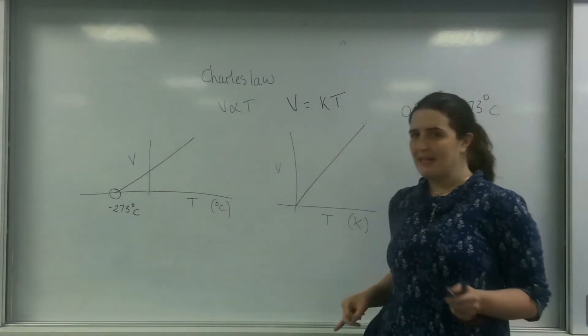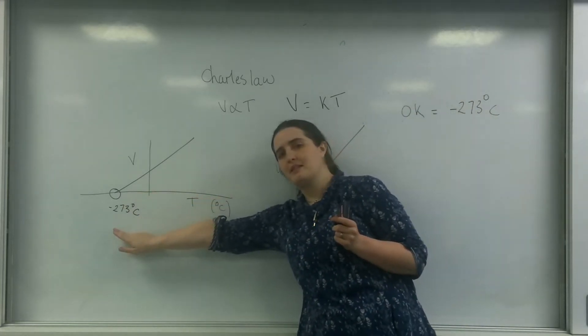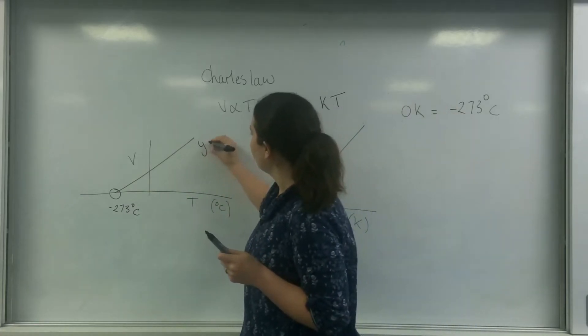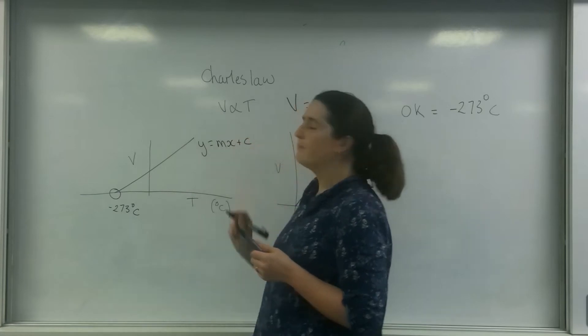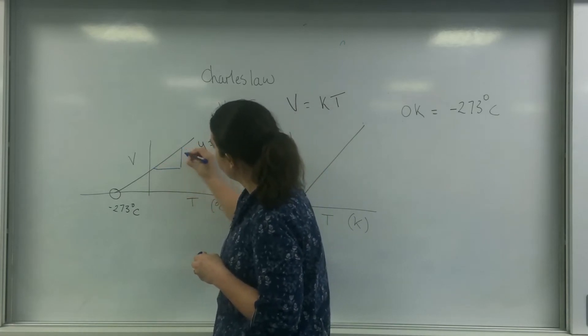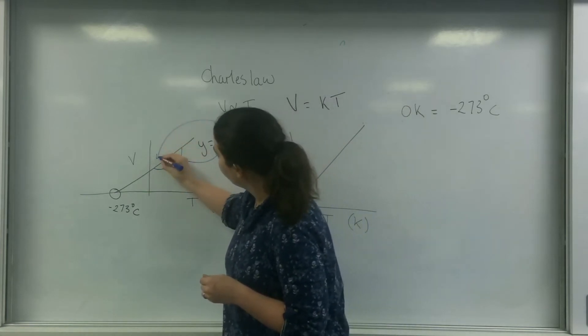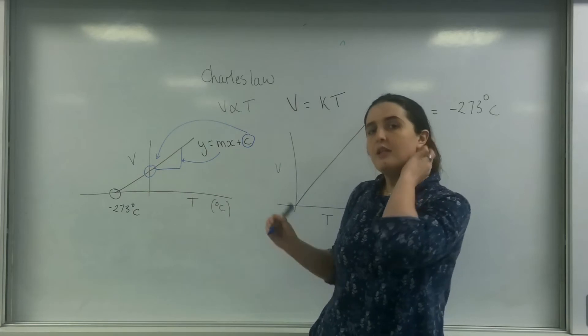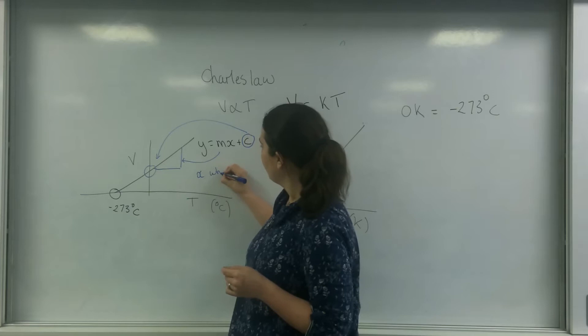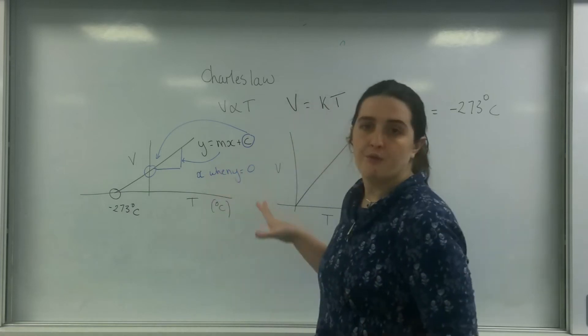And in an exam, you may be expected to work out what absolute zero is in degrees C based on this graph. And you use the formula of y equals mx plus c. If you can find the gradient of the graph and the intercept of the graph here, you can then plug that information in and find x when y equals zero. And that's how you can use this graph to find absolute zero.